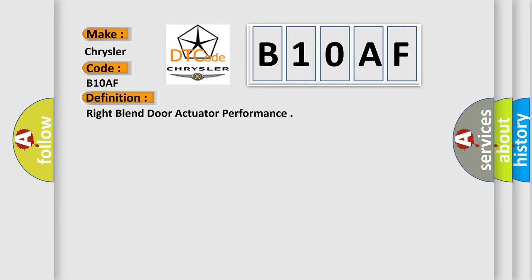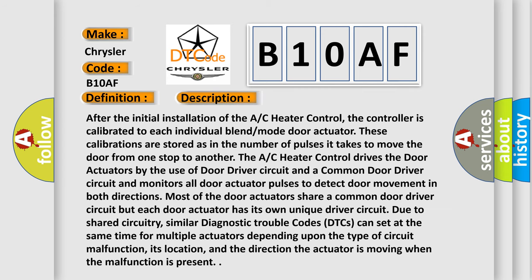Here is a short description of this DTC code. After the initial installation of the AC heater control, the controller is calibrated to each individual blend mode door actuator. These calibrations are stored as the number of pulses it takes to move the door from one stop to another. The AC heater control drives the door actuators using a door driver circuit and a common door driver circuit, and monitors all door actuator pulses to detect door movement in both directions. Most door actuators share a common door driver circuit, but each has its own unique driver circuit. Similar DTCs can set at the same time for multiple actuators depending upon the type of circuit malfunction, its location, and the direction the actuator is moving when the malfunction is present.